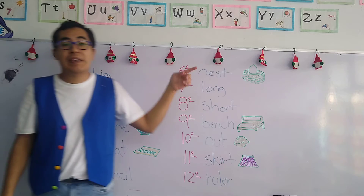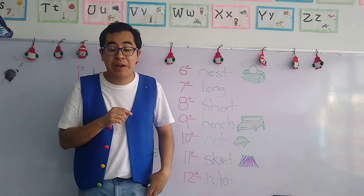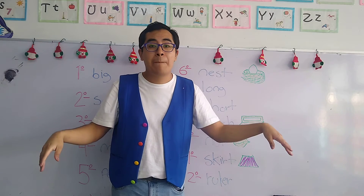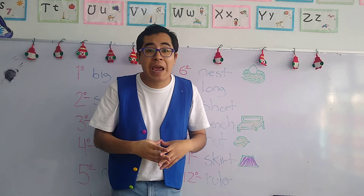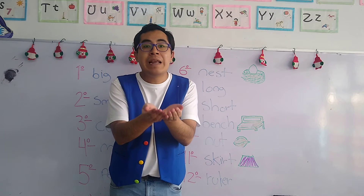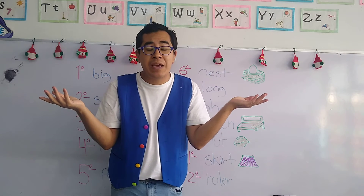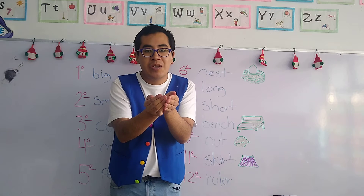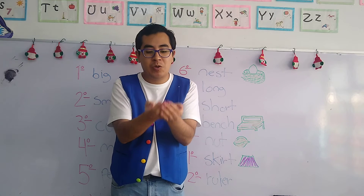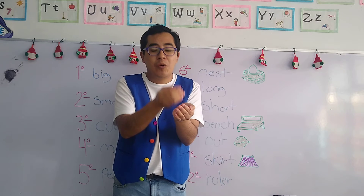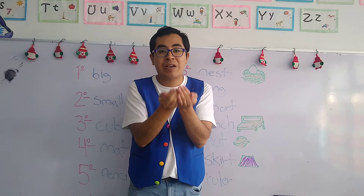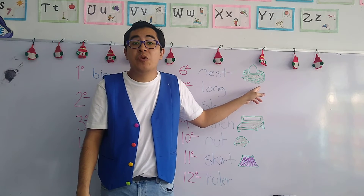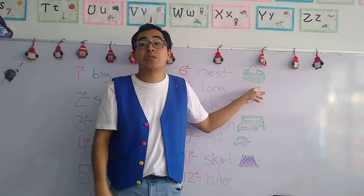Let's continue with the sixth word: "nest." Now, the nest is an object in which all of the birds — remember, pájaros — lay down their eggs. They put them in a nest so the eggs can keep warm — para mantenerlos cálidos — so the egg doesn't get cold, para que no se enfríe. That's why they put the eggs in a nest to keep them warm. The nest is an object that is colored brown. In Spanish, you know it as "nido," but with Teacher Jacob, it's called "nest."